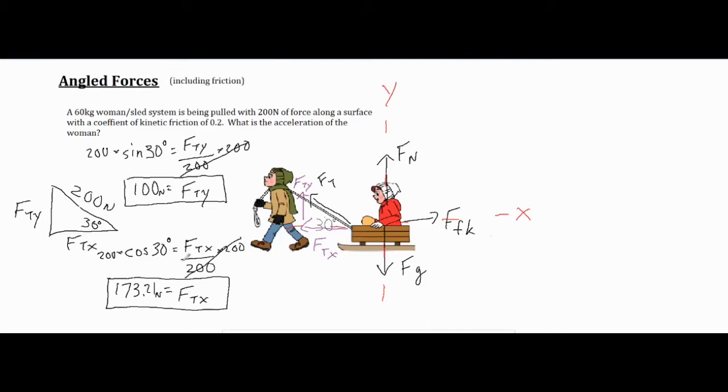I did the same exact thing for FTX, except I had to use cosine because cosine is the adjacent side divided by the hypotenuse. I did the same algebraic step and got 173.21 Newtons. As you can see, the FTX is a lot larger than the FTY. The reason being is our angle is 30 degrees above the horizontal. The halfway point would be 45 degrees. 30 degrees is below 45 degrees, so it is more directed horizontally, therefore my FTX should be bigger.